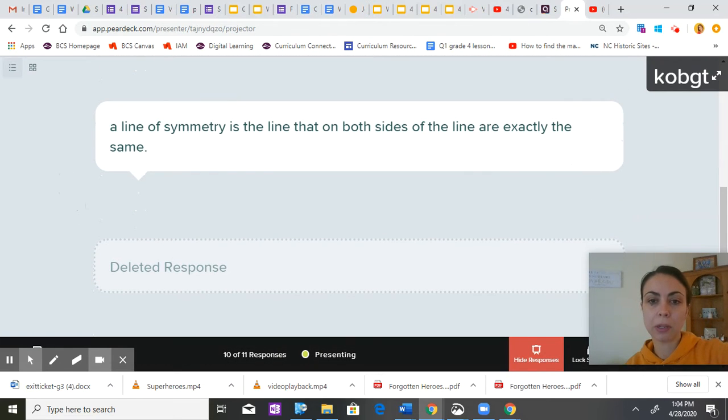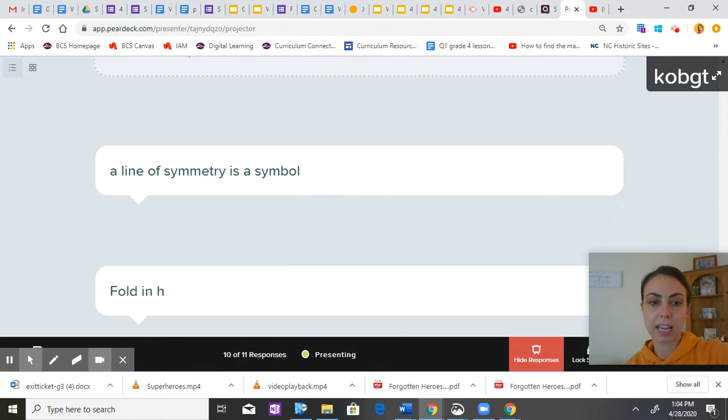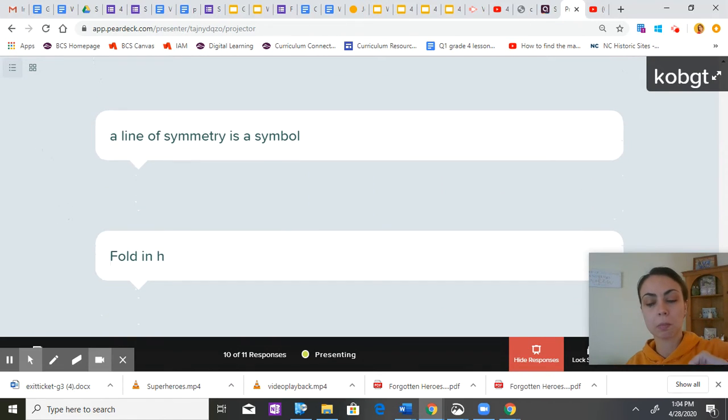A line of symmetry is a line that on both sides of the line is exactly the same. A line of symmetry is a symbol. That was the other one.